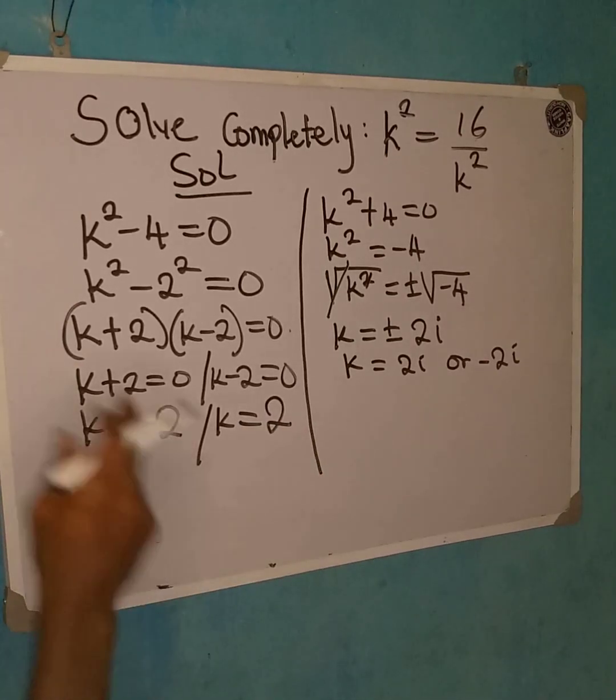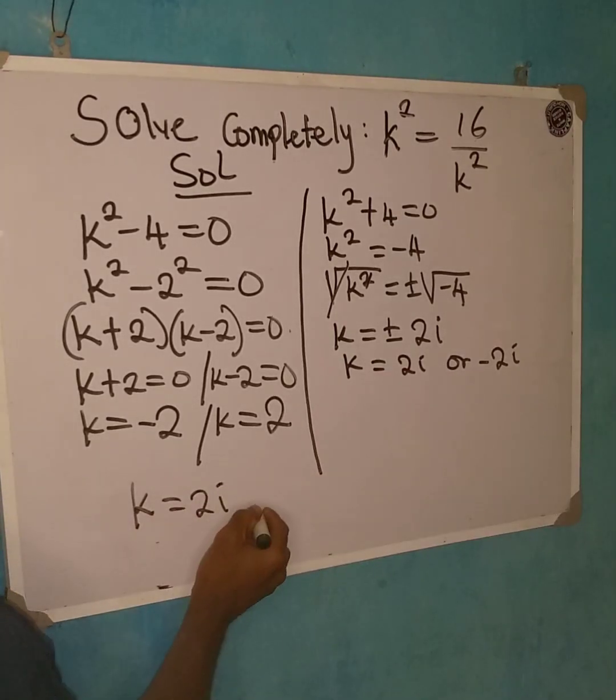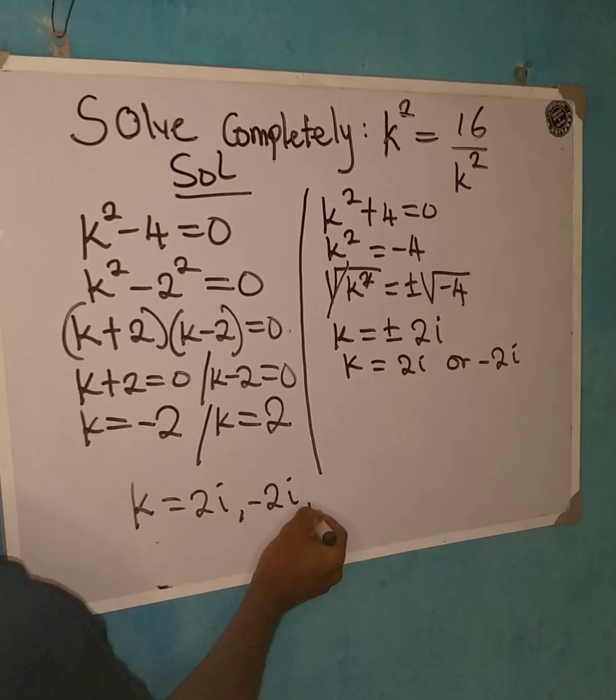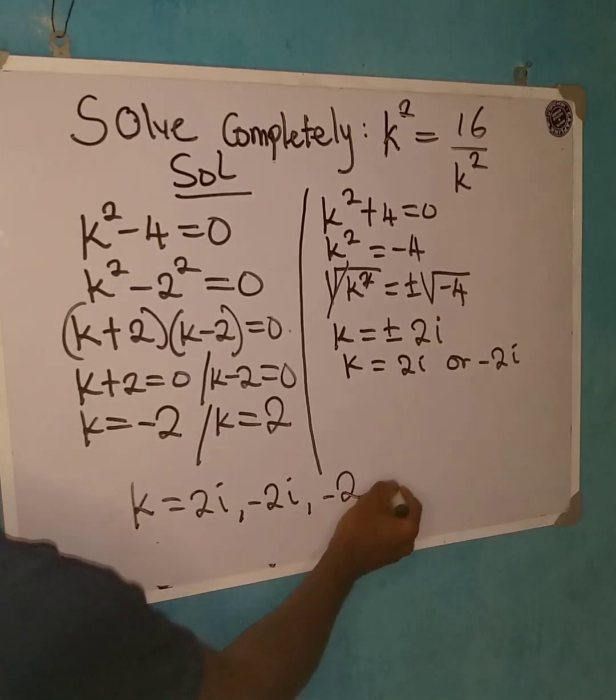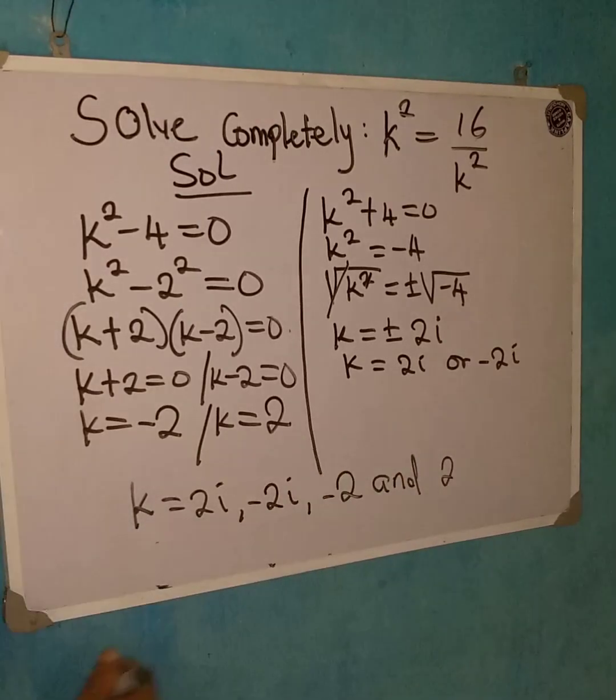So therefore, we now have four roots to the equation, which are k is equal to 2i, minus 2i, minus 2 and plus 2. If you like to remove the positive there, we have plus 2. So these are the four roots of the equation.